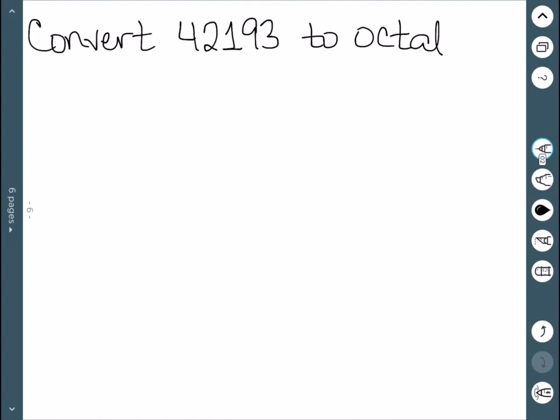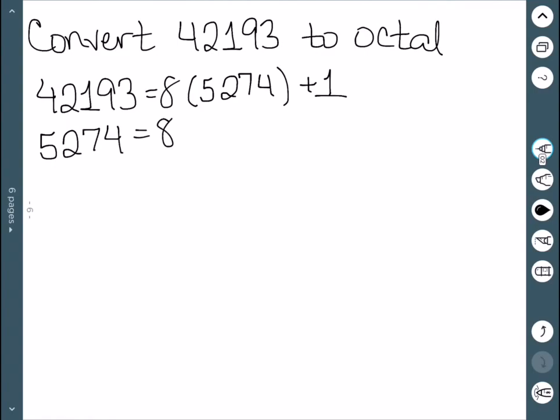We want to convert this number 42,193 to octal. So our first step is to divide this number by 8. When we do, we get a quotient of 5,274 and a remainder of 1. The next process is to divide 5,274 by 8. This gives us 659 as a quotient with a remainder of 2.